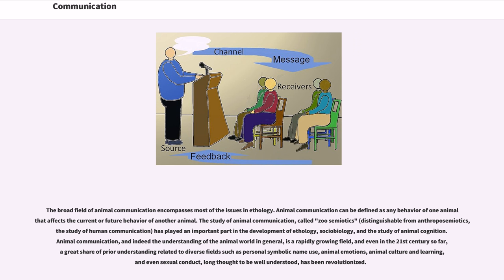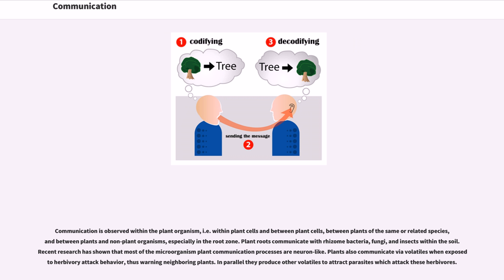Communication is observed within the plant organism, that is, within plant cells and between plant cells, between plants of the same or related species, and between plants and non-plant organisms, especially in the root zone. Plant roots communicate with rhizome bacteria, fungi, and insects within the soil. Recent research has shown that most of the microorganism-plant communication processes are neuron-like. Plants also communicate via volatiles when exposed to herbivory attack behavior, thus warning neighboring plants. In parallel, they produce other volatiles to attract parasites which attack these herbivores.